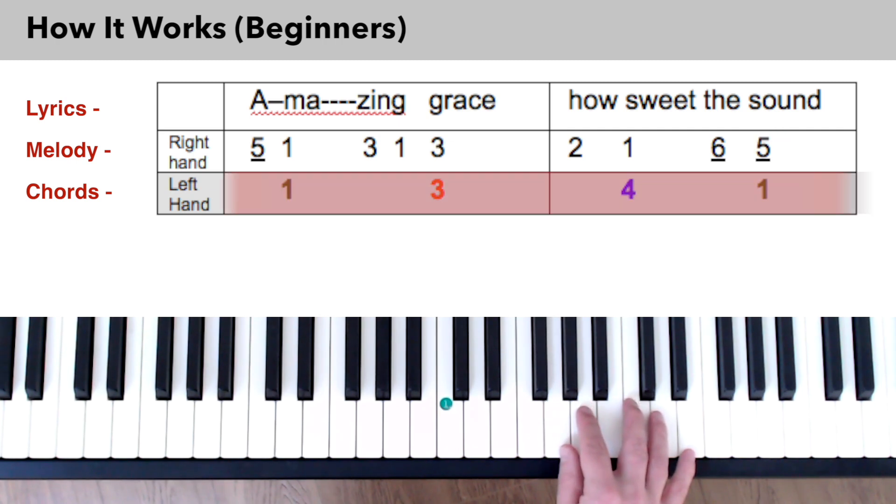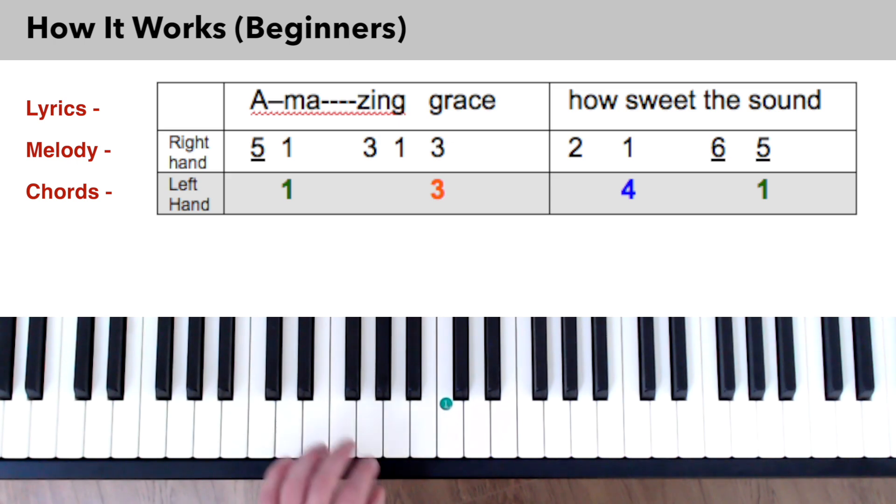The next line down shows the chords. Instead of using letters to name them, for example C major, D minor, E minor, it's easier to call them by numbers, for example one, two, three. The easiest way for beginners to play chords is with the left hand. Start on the number shown and play the chord pattern.